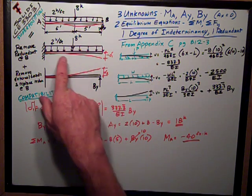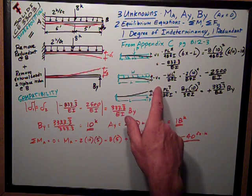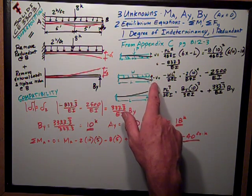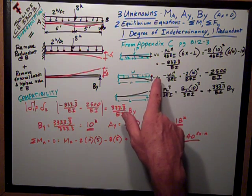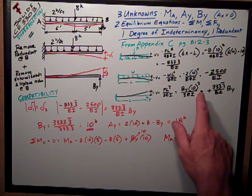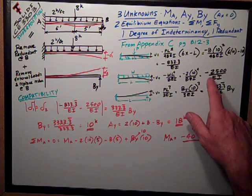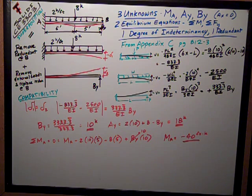Add in the uniformly distributed load on a cantilever, and the maximum deflection at the end is equal to negative WL to the fourth over 8EI. Plug the numbers in. I get that's negative 2,500 over EI.